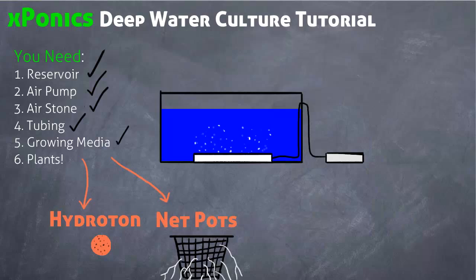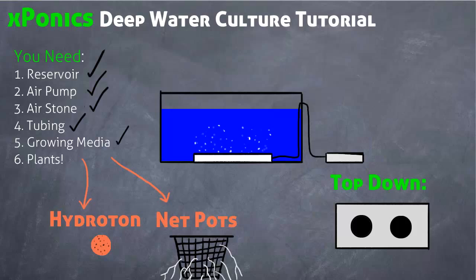So now that we have our entire system built, we have our growing media selected, the next thing we need to think about is how to get our plants in this system. So for that, we'll take a top down look at this system. These two black holes that you're seeing are drilled in or cut in to the surface of your tote. I tend to use a hole saw for this, but you can just cut it out with scissors if you don't feel like buying that bit, because it is kind of expensive. The next thing you're going to have to do is drop the Hydroton into the net pots, put your little seedling in as well, and then plop that into your system. And when it's all said and done, it looks something like this.